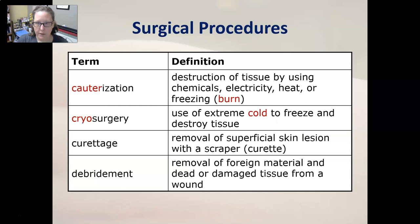Let's look at some surgical procedures. Cauterization is the destruction of tissue using chemicals, electricity, heat, or freezing — it essentially burns the tissue and turns it into more of a scar. Cryosurgery is the use of extreme cold to freeze and destroy certain tissue.